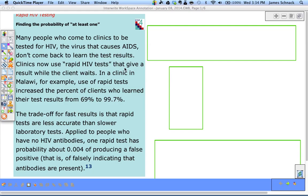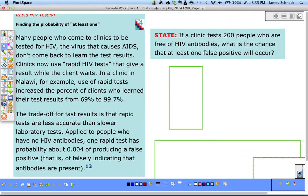We're going to start with a four-step problem: finding the probability of at least one. Take a moment to read this problem. We have false positives where the probability that somebody doesn't have HIV but the test says they do is 0.004, so four in a thousand. If we test 200 people who do not have HIV, what's the chance that at least one false positive will occur?